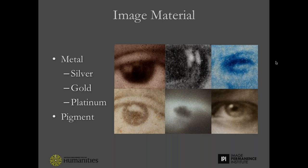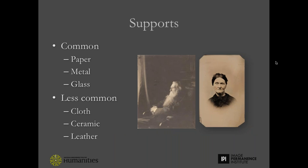Most 19th century photographic processes are silver-based. In most silver-based prints, the image is composed of both silver and gold. In other processes, the image material is another metal like platinum, and in some processes the image material is actually pigment. The image material — its size, shape, and type — drives image color or tone. The appearance of the image at the microscopic level is a function of how the image was formed, so understanding image formation and what the image material is really helpful in process identification.